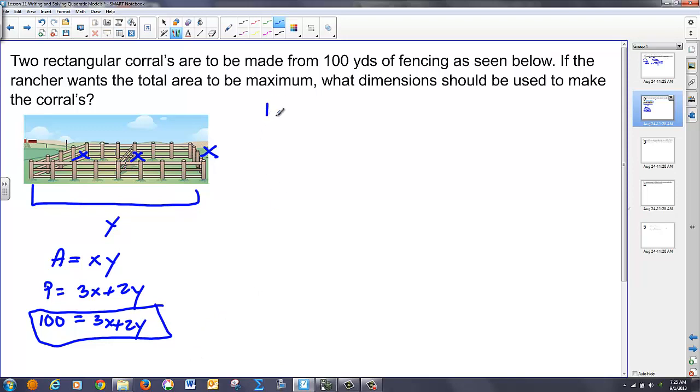I just have to solve for y. So I'm going to start with my 100 equals 3x plus 2y, solve for y so I've got 100 minus 3x over 2 is equal to y. If I know that's true then I can say my area is equal to x times 100 minus 3x over 2. And I can leave it like that. That's fine. And what I'm going to try to do is maximize this.